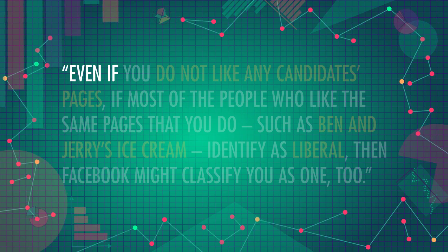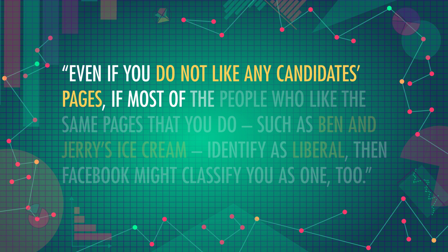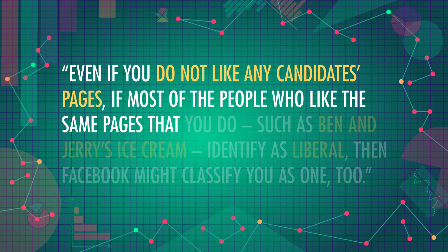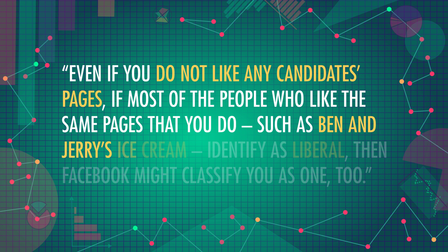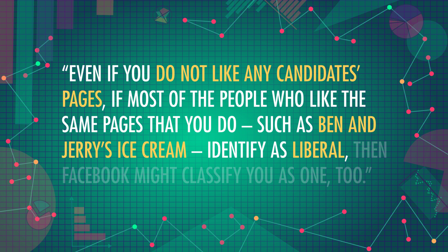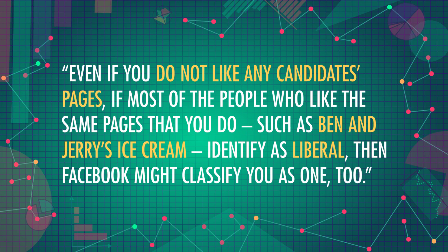Then that data gets used. Facebook itself sorts people into categories like political views. In 2016, the New York Times reported that even if you do not like any candidate's pages, if most of the people who like the same pages that you do — such as Ben and Jerry's ice cream — identify as liberal, then Facebook might classify you as one too. And that's just for the US — we don't know what they're gathering about people's views in other countries. Categories like this allow advertisers on Facebook to select very specific criteria and send ads to the exact groups of people they want to see them.